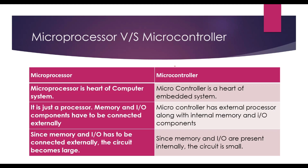The microprocessor is the heart of the computer system, whereas the microcontroller is the heart of the embedded system. The embedded system performs specific work — for example, a washing machine performs only washing. In a microprocessor, memory and IO components have to be connected externally.